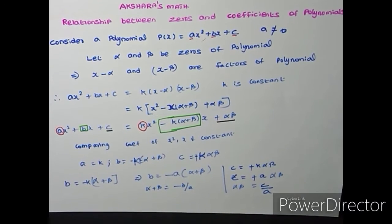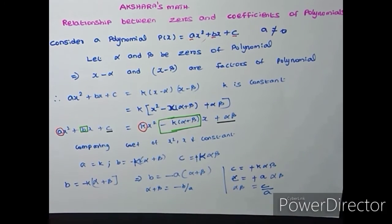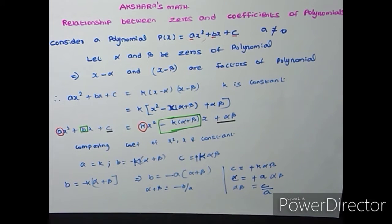Welcome to Akshar Asma. In today's class we are going to find out the relationship between zeros and coefficients of polynomials. There is a relationship between the zeros and coefficients. The zero of a polynomial is any value which, when substituted in the polynomial, gives an answer of zero — that is called the zero of the polynomial.